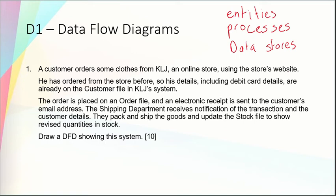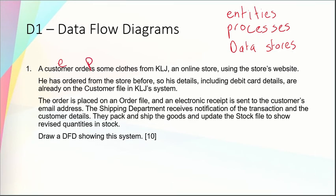So if we go through the question together, it starts off by saying a customer orders some clothes from KLJ, which is an online store using the store's website. I can see on that first line you have 'customer', which is an entity because it's a person or a department. Also in that first line we have a process — the customer is ordering some clothes from the website, so a process is occurring. So there we have two things on the first line.